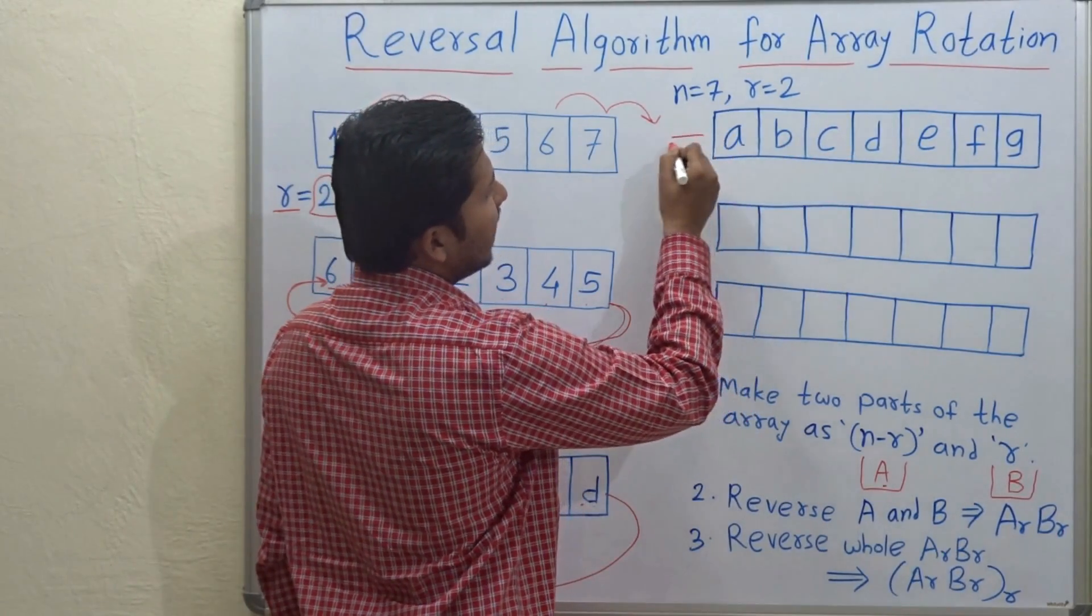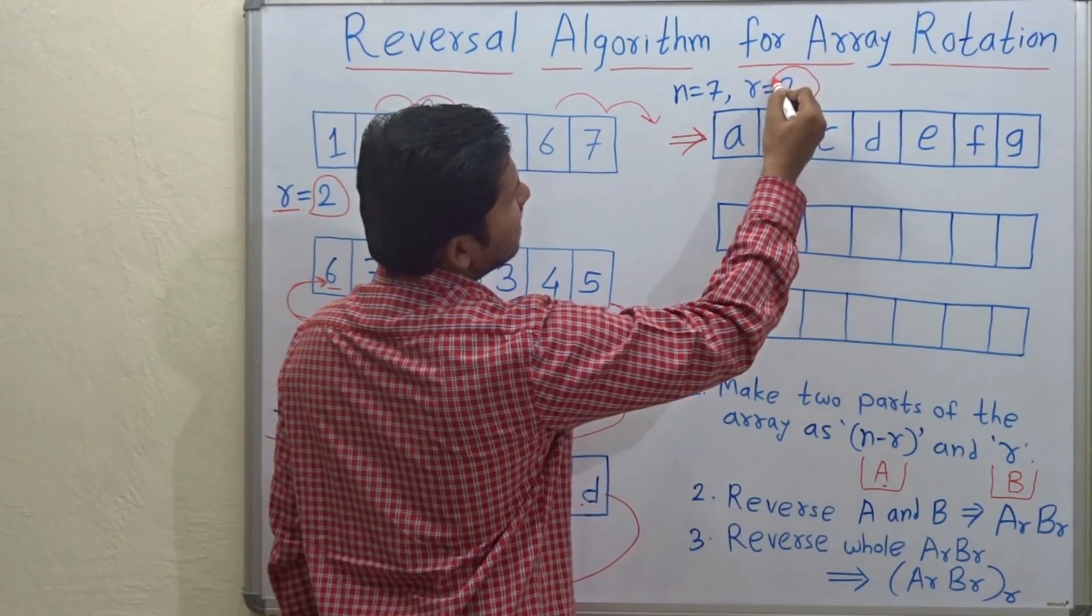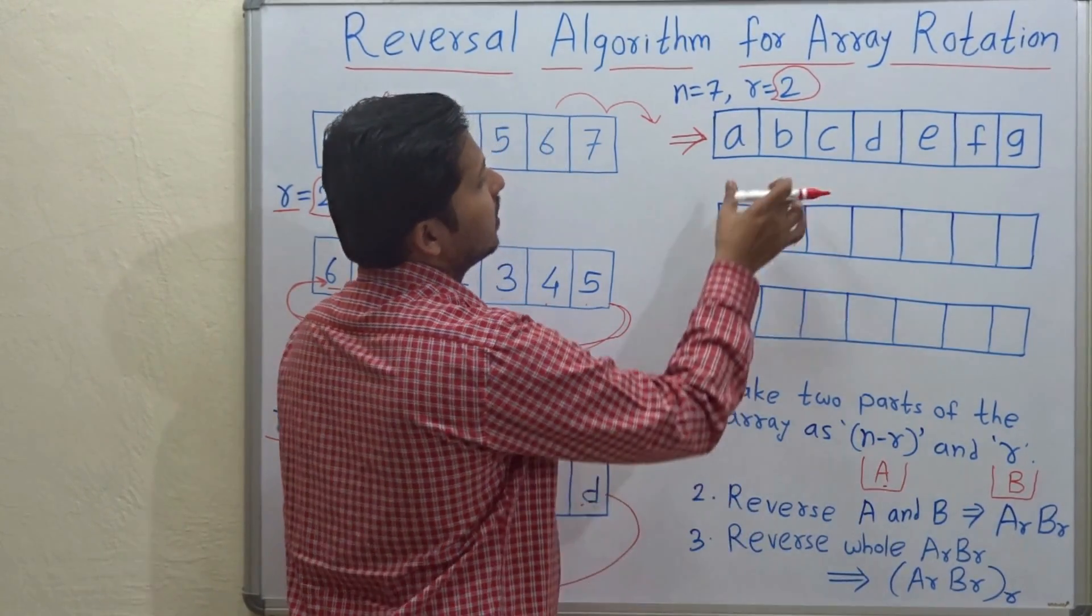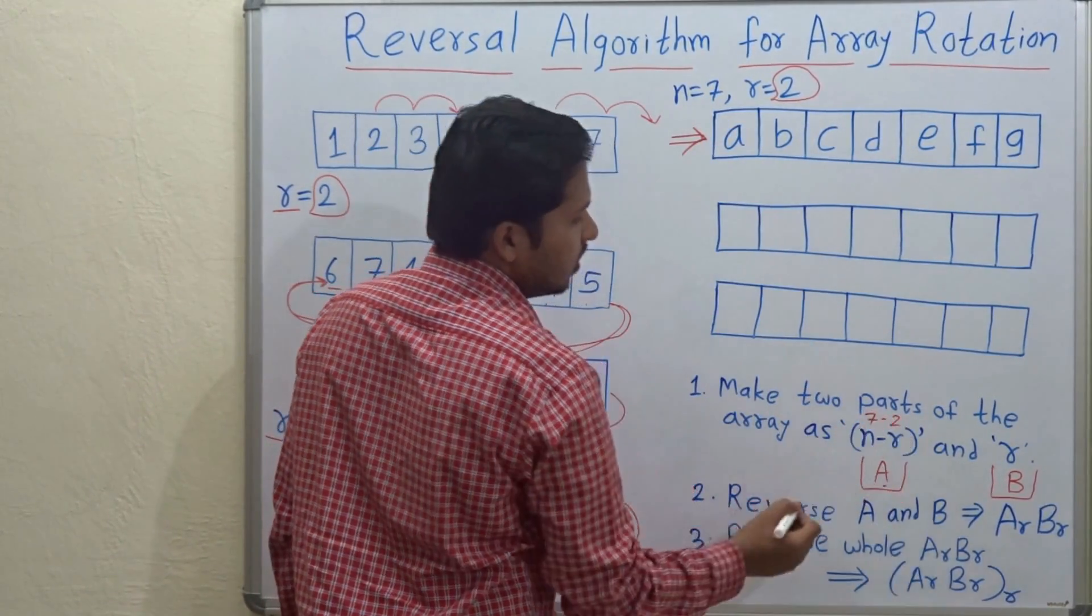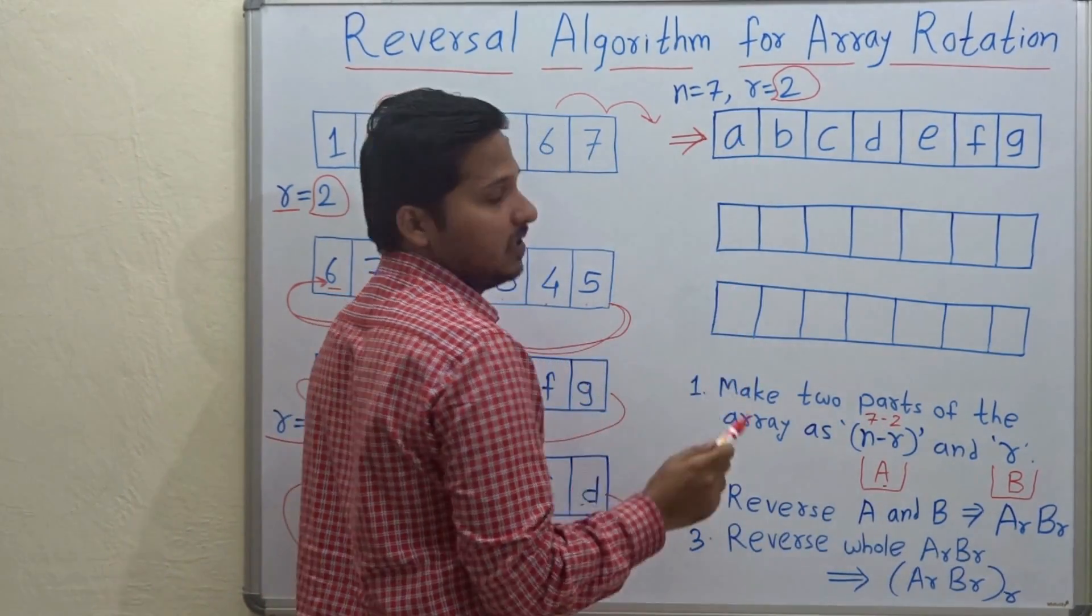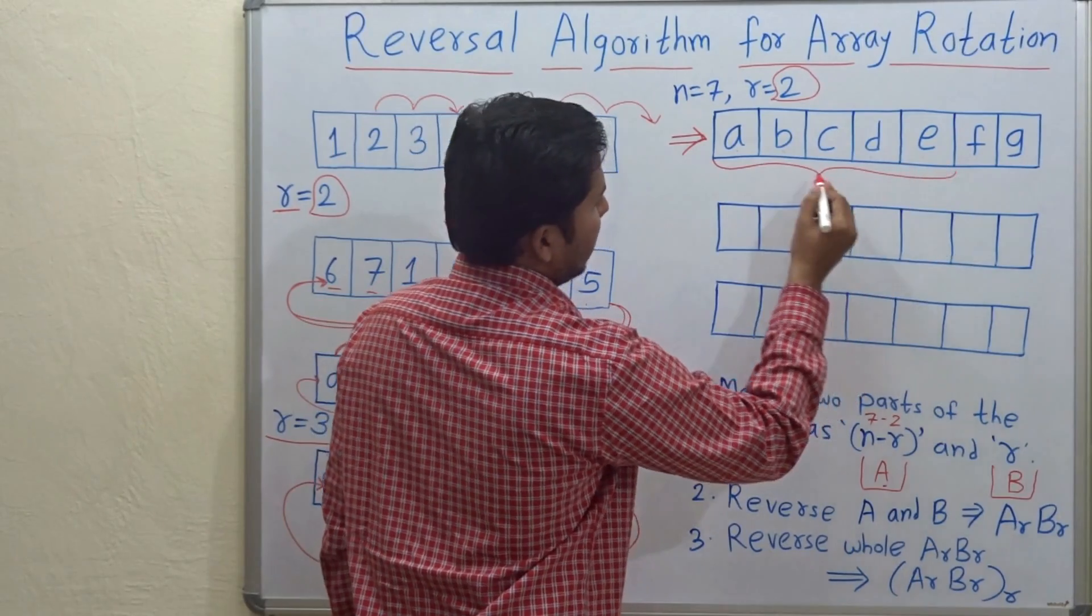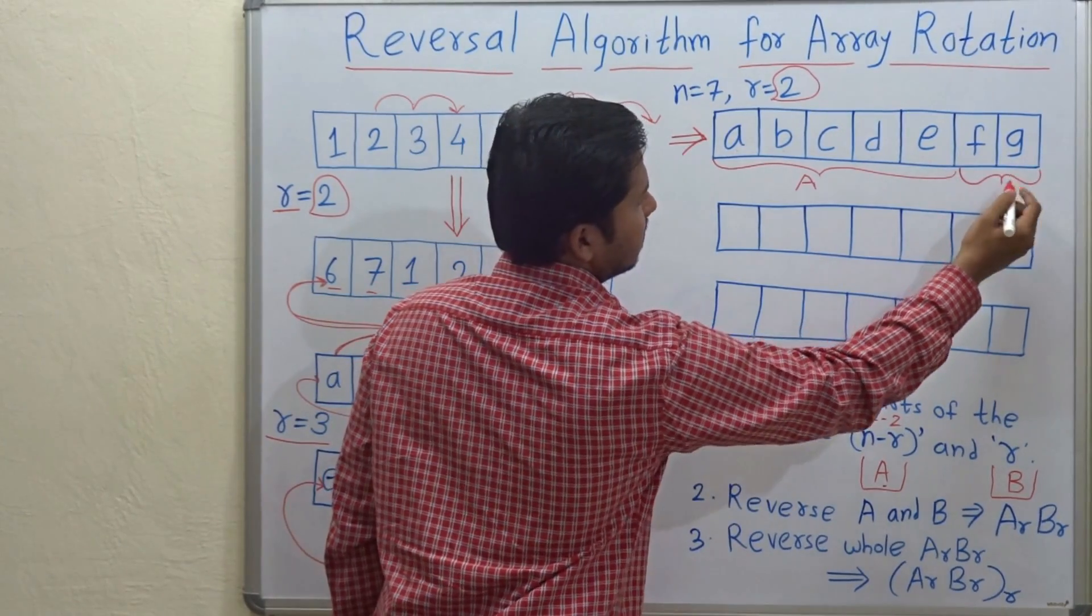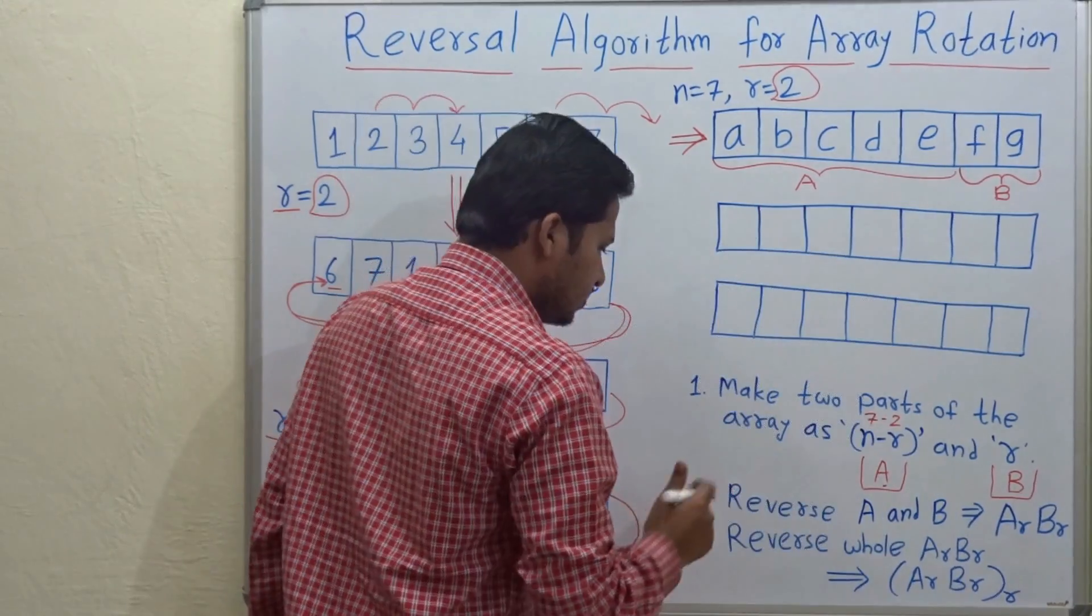So let's see. See here this is the input array. The size of the array is 7 and you have to rotate this array by two places. So the first part is N minus R. So if the size of the array is 7, then 7 minus 2. So that is 5. So the first part will be of 5 elements: 1, 2, 3, 4 and 5. So this is the first part and it will be called as A and the remaining two elements are the second part. That will be called as B.